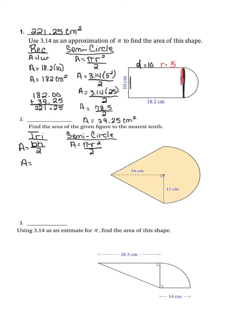They gave us half the base of the triangle, which is 11, so the entire base is 22. Area equals 22 times the height of 16, divided by 2. Multiplying 22 times 16 gives 352. Dividing 352 by 2 gives 176. So the area of the triangle is 176 centimeters squared.